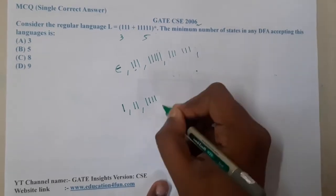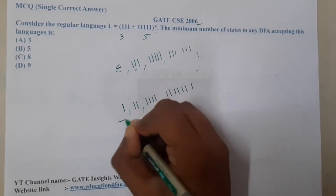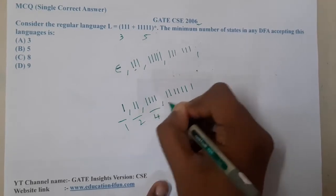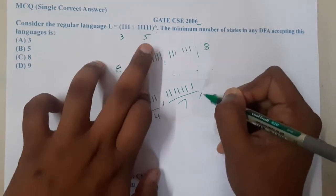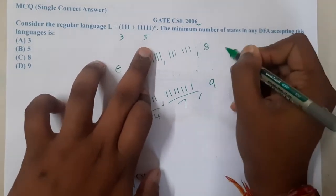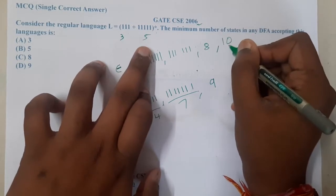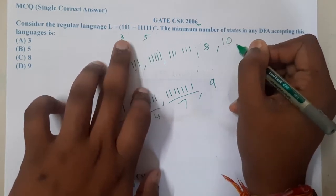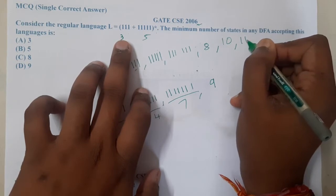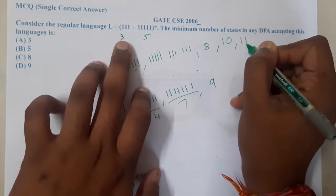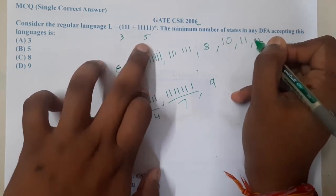Can I generate seven ones? No — one, two, three, four, five, six, seven — so seven is not generated. Can I generate eight ones? Five plus three is eight — yes. Can I generate nine ones? No. Can I generate ten ones? Yes. Can I generate eleven ones? Five plus three plus three — yes. Can I generate twelve ones? Yes, four times three is twelve.